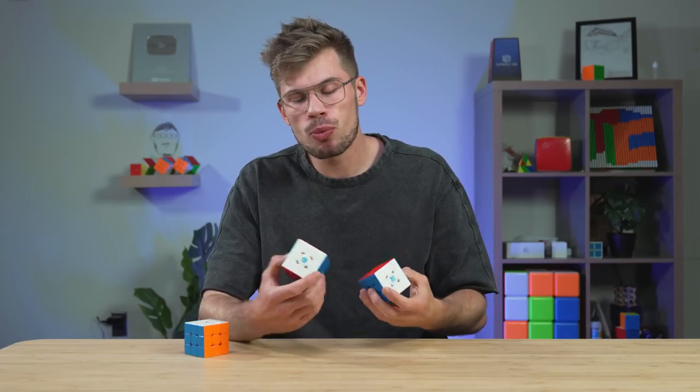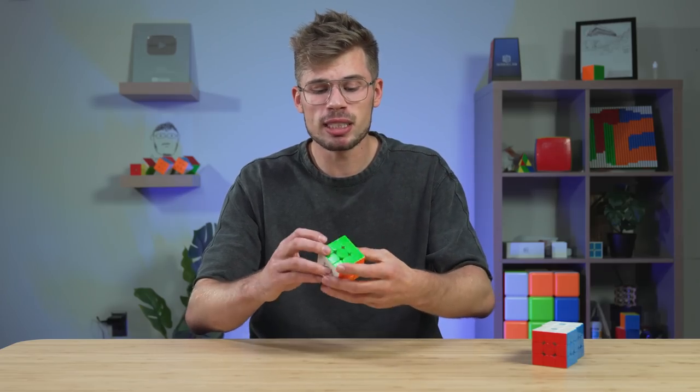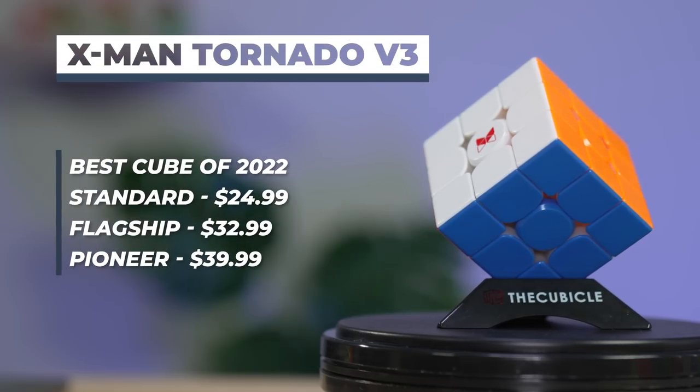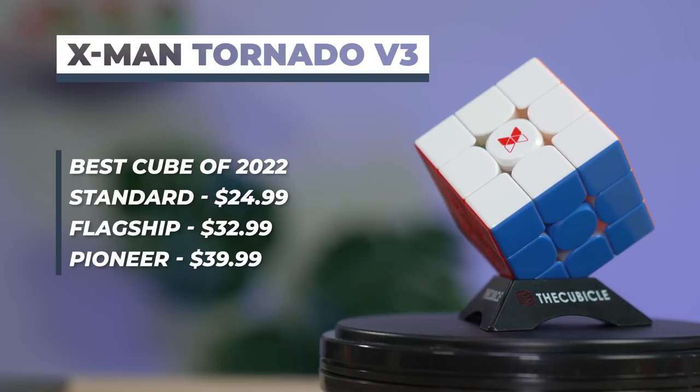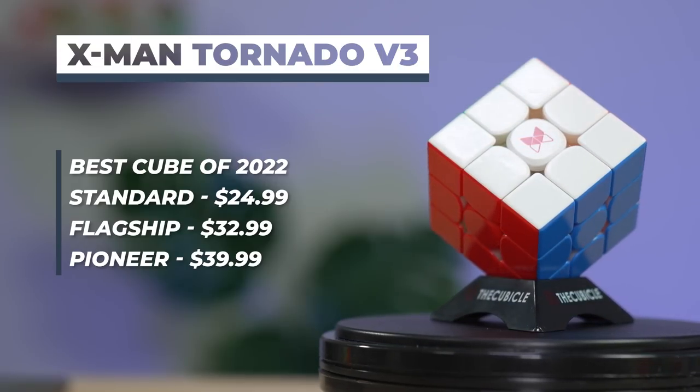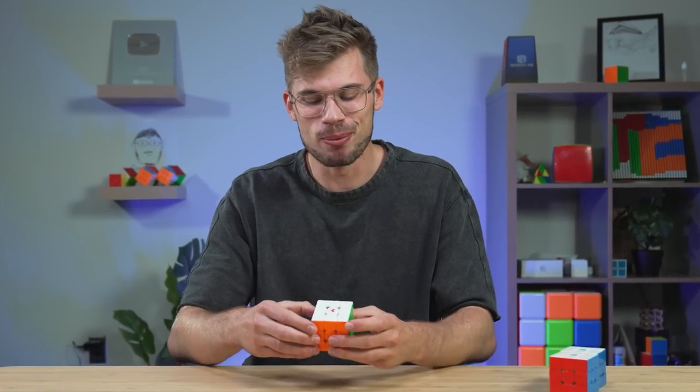we have the budget cube, we have the most premium cube, but the best overall pick, the best 3x3 release of this year has to be the Tornado V3. We actually went with the flagship edition because we think this is just the sweet spot between all the three versions, because there are three versions. First of all, we have this cube without core magnets. This, the flagship edition, has core magnets. And then we also have a pioneer version, which is this cube with Maglev. I know it's a lot, but the cubes are good. Just that's all you need to know.